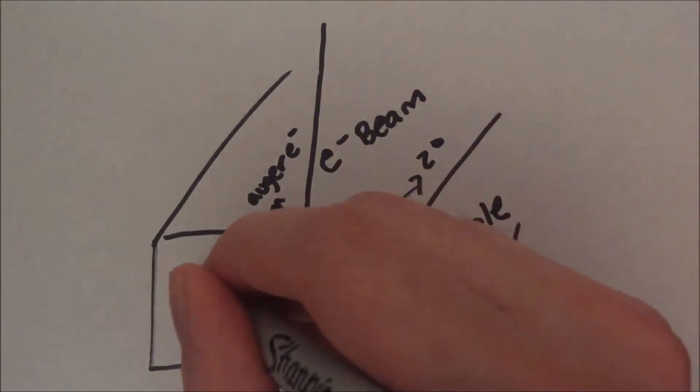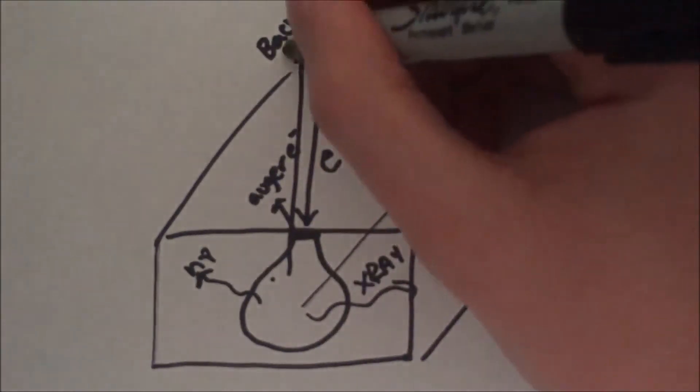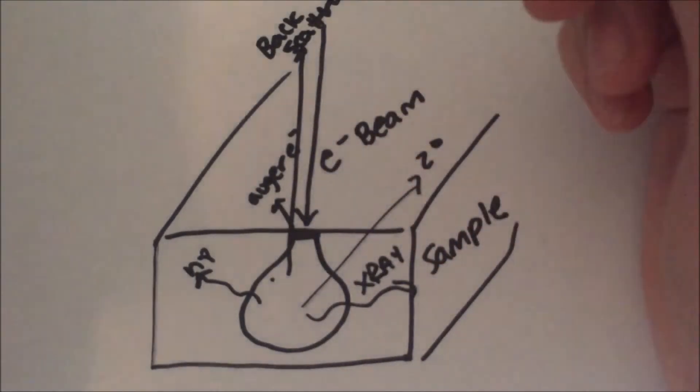Conversely, Auger electrons can only escape the sample interaction volume within the first few nanometers from the surface, giving Auger microscopy an upper hand in studying surface composition.